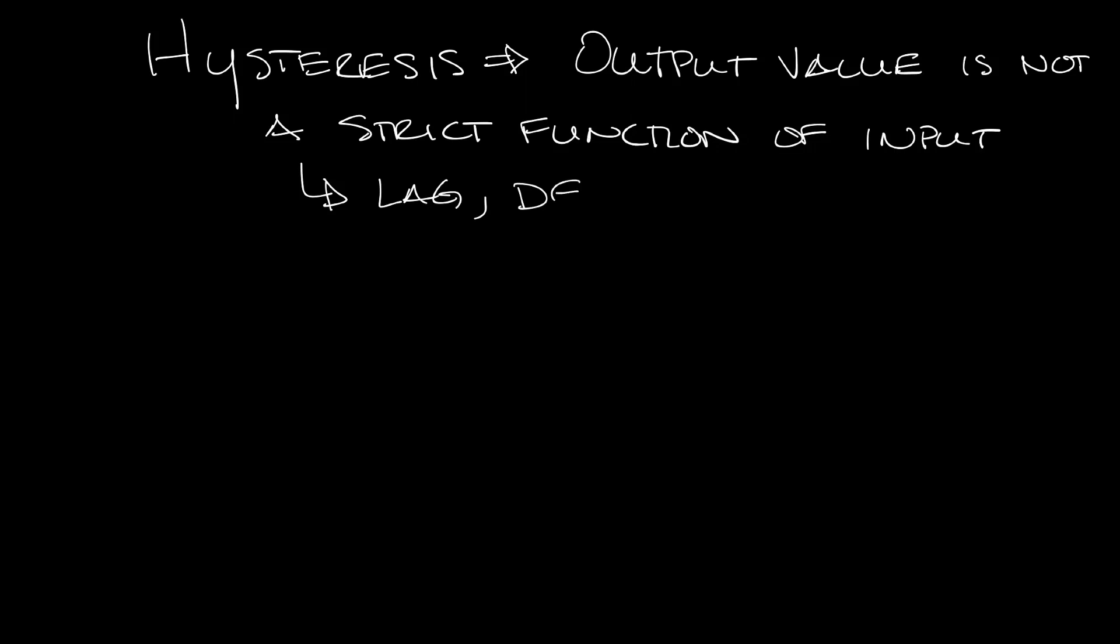So what is hysteresis? Hysteresis is a property of a system such that the output value is not a strict function of the input value, but it also incorporates some lag, delay, or history dependence. In particular, it's when a response for a decrease in an input is different than the response for an increase of an input.